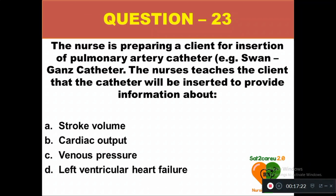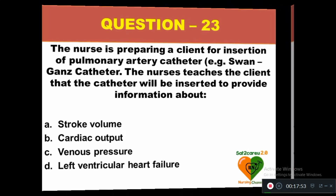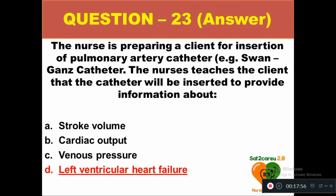Question 23: The nurse is preparing a client for insertion of a pulmonary artery catheter (Swan-Ganz catheter). The nurse teaches that the catheter will be inserted to provide information about: option A stroke volume, option B cardiac output, option C venous pressure, option D left ventricular heart failure. The right answer is option D — left ventricular heart failure; we get this information when we insert the pulmonary artery (Swan-Ganz) catheter.